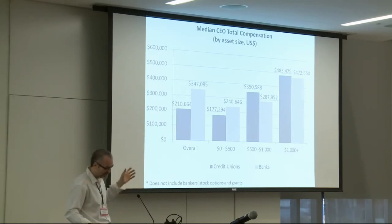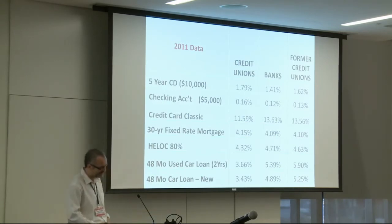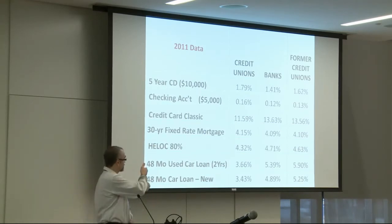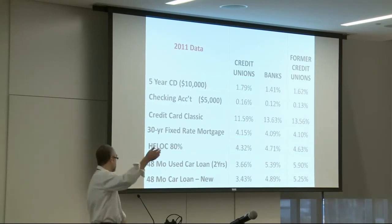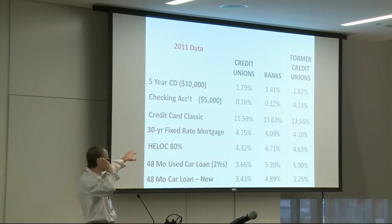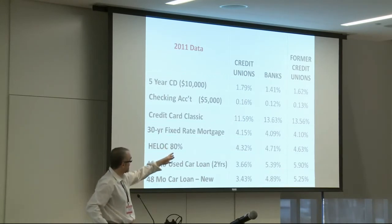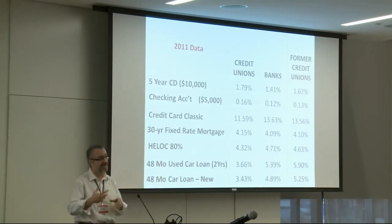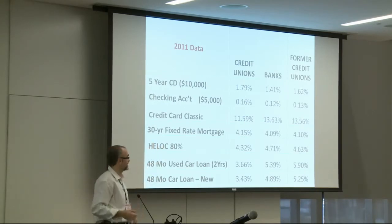Members of cooperative institutions come out quite well by the structure. For a variety of financial services products, credit unions either have better rates on savings products — higher rates — or lower rates on mortgages and loans. The 30-year fixed-rate mortgage is the only category where credit unions come out a little behind. The last column is former credit unions that demutualized and became joint stock banks — you can see their behavior starts looking more like bank behavior after that conversion, suggesting the structure may be driving some of the behavior.